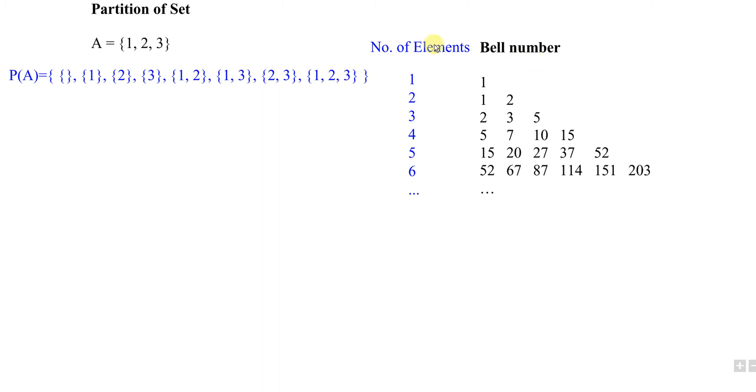For example, if a set has only one element, we will have one partition. If we have two elements, we will have two different combinations of partitions. If we have three, we will have five different combinations of partitions.